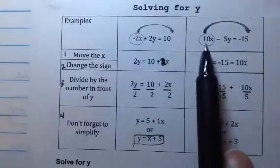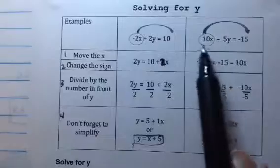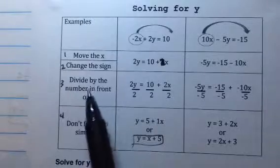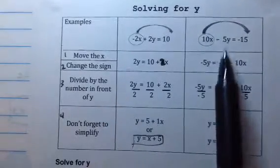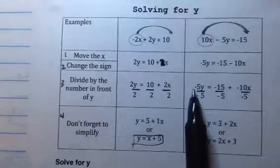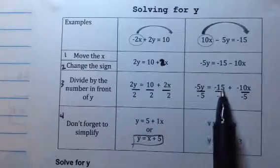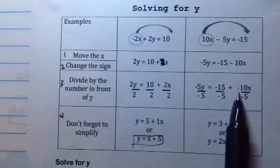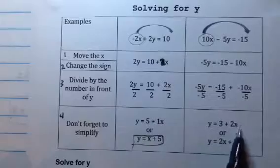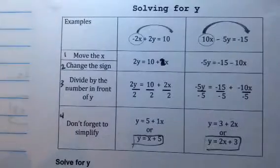Now on this one we did the same thing — we circled the X. So move the X, change the sign. We changed it from a positive to a negative. Step 3, we're going to divide everything by the number in front of the Y. Here we have a negative 5, so everything gets divided by negative 5. Negative 5 divided by negative 5 is just Y. Negative 15 divided by negative 5 is 3. Negative 10 divided by negative 5 is 2. Remember we bring down the X, so we write it as 2X plus 3.